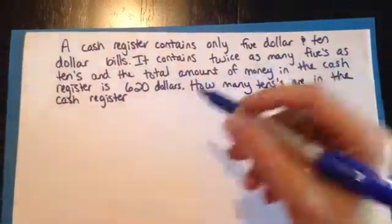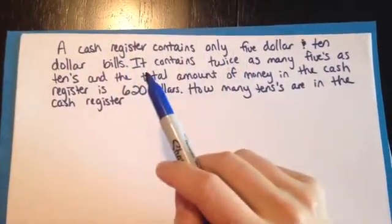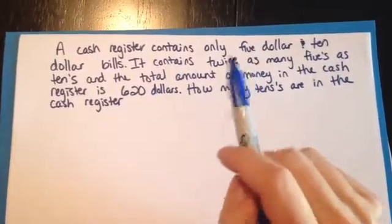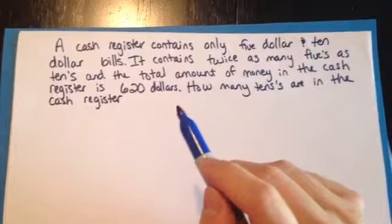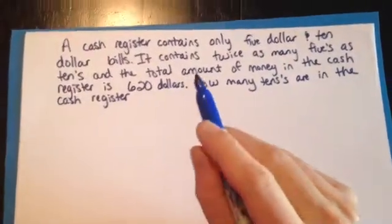So it says, a cash register contains only $5 and $10 bills. It contains twice as many fives as tens, and the total amount of money in the cash register is $620. How many tens are in the cash register?